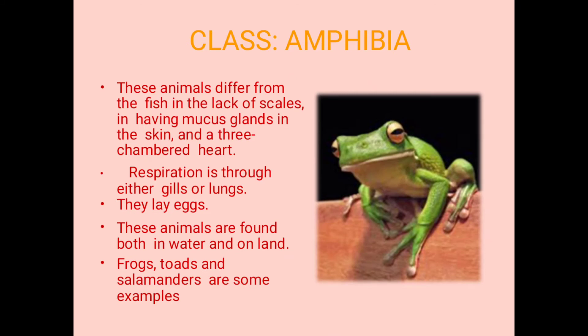The second class is Amphibia. Amphibians are those animals that live on land as well as survive in water. These animals differ from fish in the lack of scales, and they have mucous glands in the skin which provide them moisture. Their heart is three-chambered.